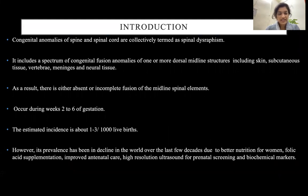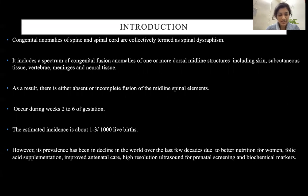Introduction: Congenital anomalies of the spine and spinal cord are collectively termed as spinal dysraphism. It includes a spectrum of congenital fusion anomalies of one or more dorsal midline structures, including skin, subcutaneous tissue, vertebrae, meninges, and neural tissue. As a result, there is either absent or incomplete fusion of midline spinal elements. These occur during two to six weeks of gestation.